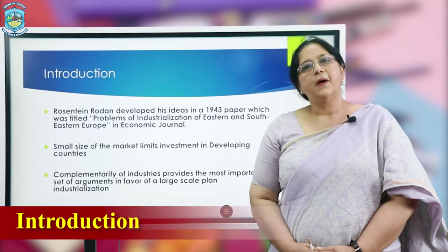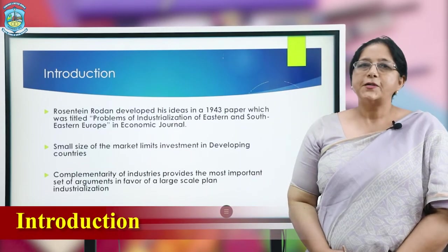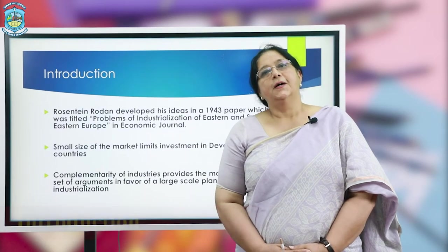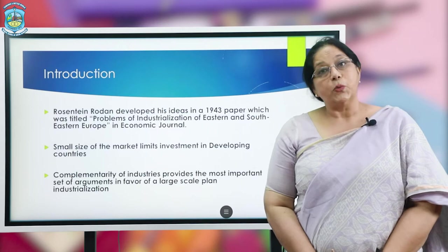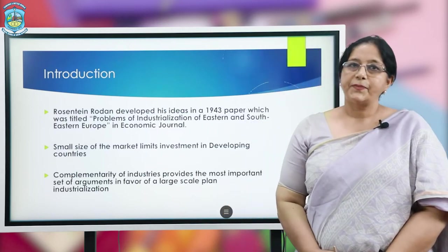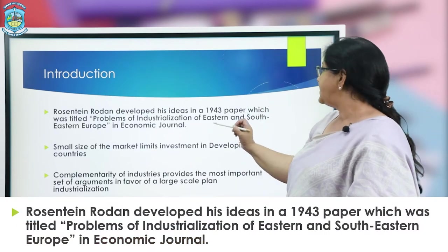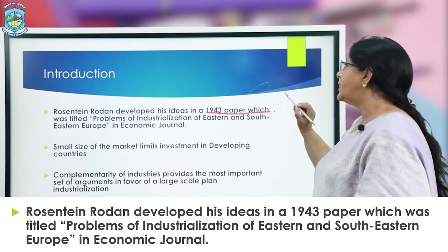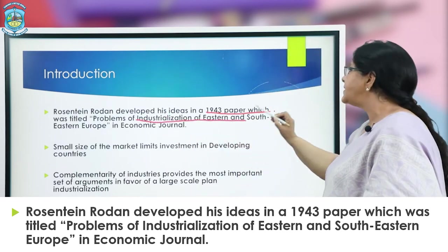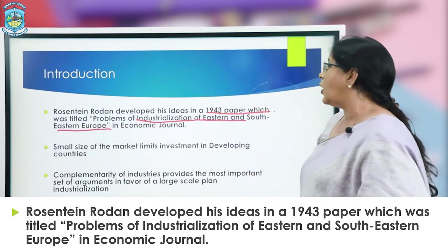Rosenstein-Rodan was a developmental economist who worked in the London School of Economics, taught in various prestigious institutes of the world, and was a firm believer in the balanced growth strategy. He presented his ideas in a 1943 paper titled 'Problems of Industrialization of Eastern and Southeastern Europe' in an economic journal.